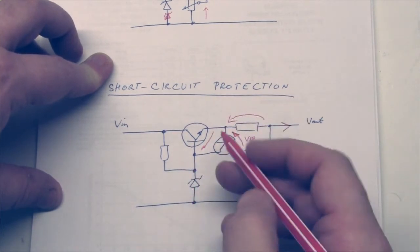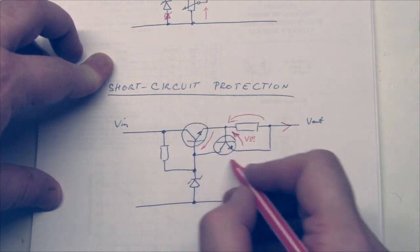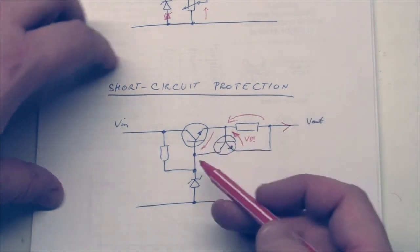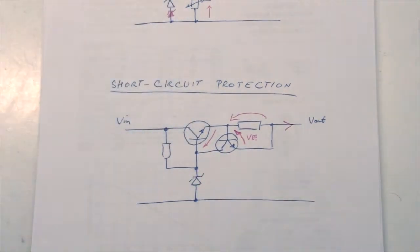Instead of having 0.7 volts here turning on this transistor, it will be short circuited through here, giving a voltage of less than 0.7 volts and this transistor will turn off. So it's a little bit tricky to understand, but believe me, it works great.